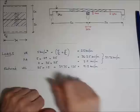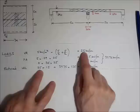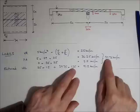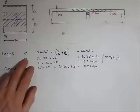Now we have to factor up variable and permanent actions. The variable action factor is 1.5, so we multiply it by 1.5. The permanent action factor is 1.35, so we multiply that by 1.35, which gives us a total value of 91.2kN/m run.